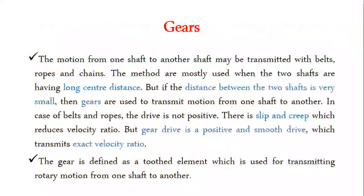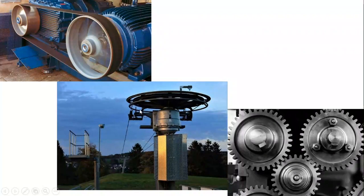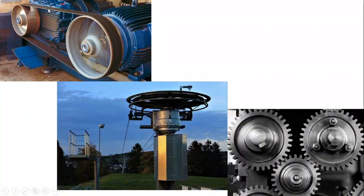What are gears? Motion from one shaft to another shaft may be transmitted with belt, rope, and chains. These methods are mostly used when the two shafts are at a long distance. This is the belt drive; here the distance between the two shafts is very long. This kind of arrangement uses chain, rope, and belt drives — this is the rope drive.